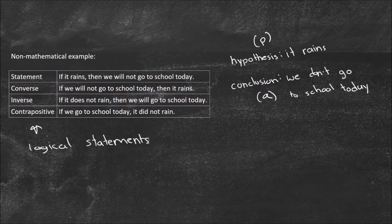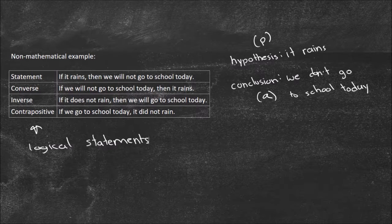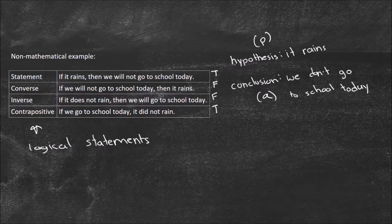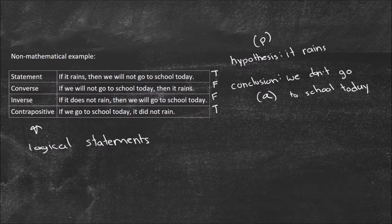Then lastly, the contrapositive: 'if we go to school today, it did not rain.' That's true — if we're at school, we know it didn't rain. So the truth values are: the original statement is true, the converse is false, the inverse is false, and the contrapositive is true. That's because the converse and inverse don't include all possible reasons you would not go to school — it could be snowing, tornadoes, or anything like that. Hopefully that provides a little introduction to logic. We're going to get into the rules of logic, and eventually you'll be able to form converses, inverses, and contrapositives yourself and apply them to mathematical rules and formulas. Thanks for watching — let me know if you have any questions.